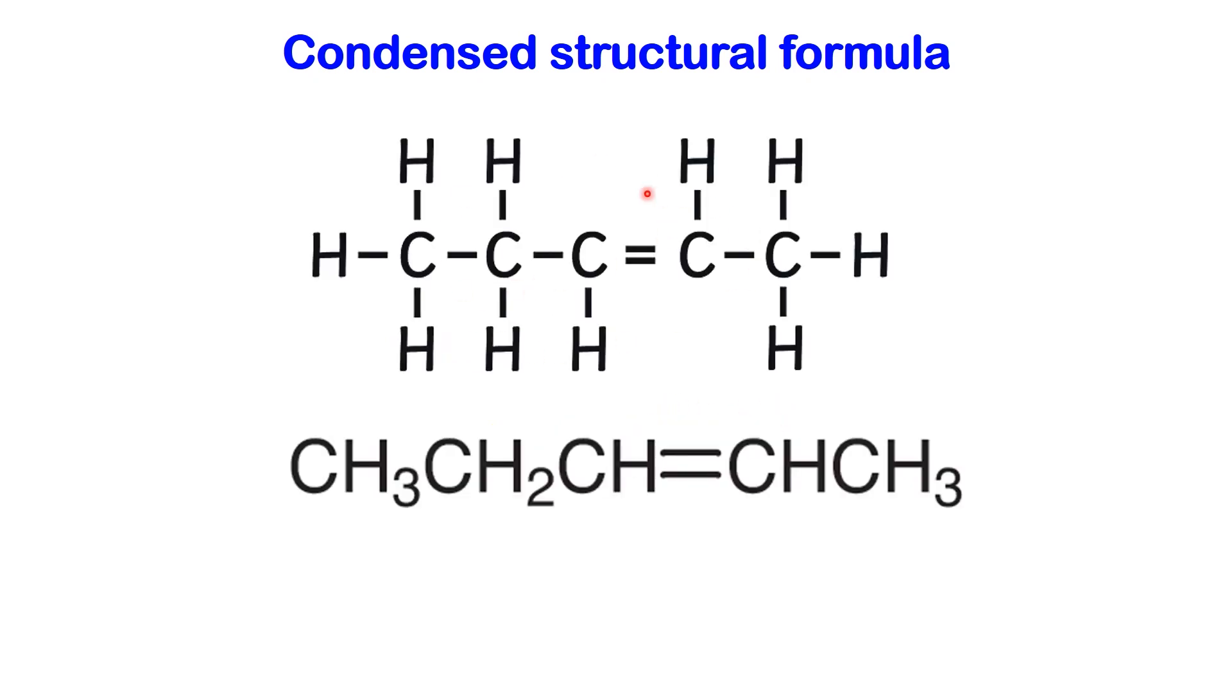Here, we're examining another molecule. This compound contains a double bond, and we will apply the same method to draw its condensed formula. In this case, we will retain the carbon-carbon double bond and depict the hydrogen atoms following each carbon to which they are bonded.